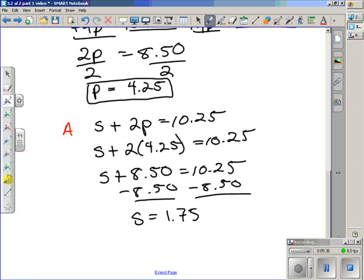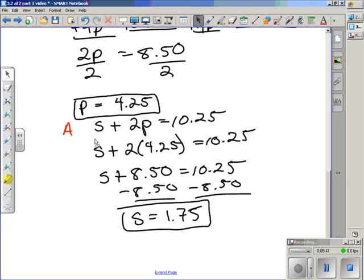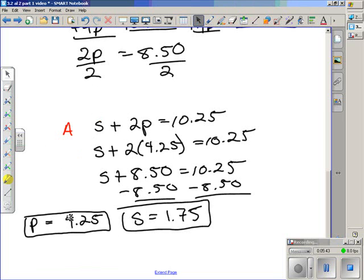So we can see our solutions, the price for a piece of pizza is $4.25, and the price for a soda is $1.75. There will be a third video on solving systems of equations using substitution, and that third video will be a second problem-solving situation.